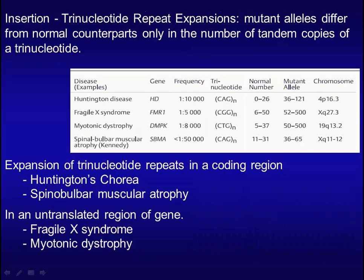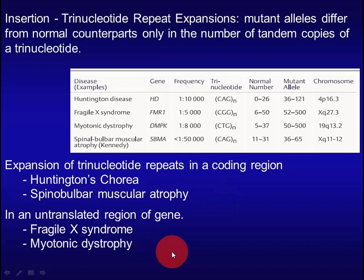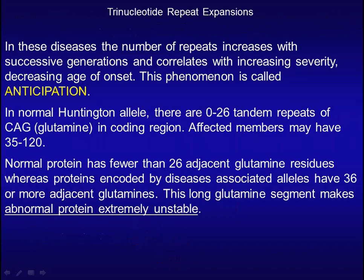There is a group of diseases in which extra tandem copies of trinucleotides are inserted into a gene — they are called trinucleotide repeat expansions. Mutant alleles differ from normal counterparts only in the number of tandem copies of trinucleotide. Huntington disease and spinal-bulbar muscular atrophy have expansion of trinucleotide repeats in a coding region, while Fragile X syndrome and myotonic dystrophy have expansions in an untranslated region. The number of repeats increases with successive generations and correlates with increasing severity and decreasing age of onset — this phenomenon is called anticipation.